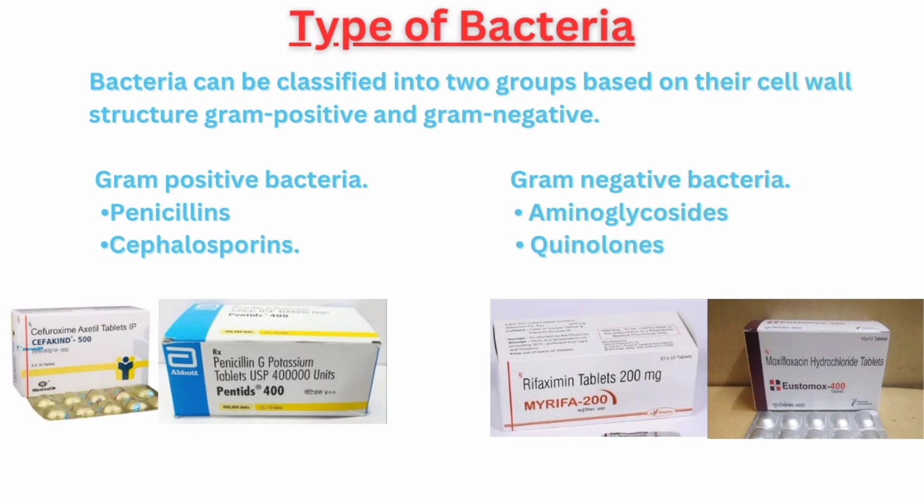Bacteria can be classified into two groups based on their cell wall structure: gram-positive and gram-negative. Gram-positive bacteria have a thick, waxy layer that stains purple when exposed to a dye called gram stain. Gram-negative bacteria have an extra lipid layer that stains pink. Some antibiotics work better against one group than the other, so it is important to identify the type of bacteria before choosing an antibiotic. For example, penicillins and cephalosporins are more effective against gram-positive bacteria, while aminoglycosides and quinolones are more effective against gram-negative bacteria.